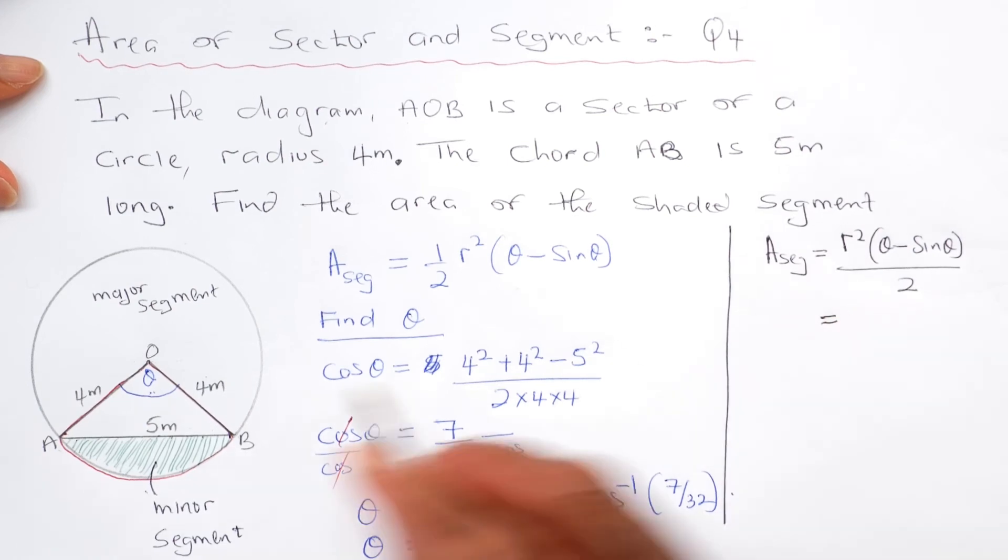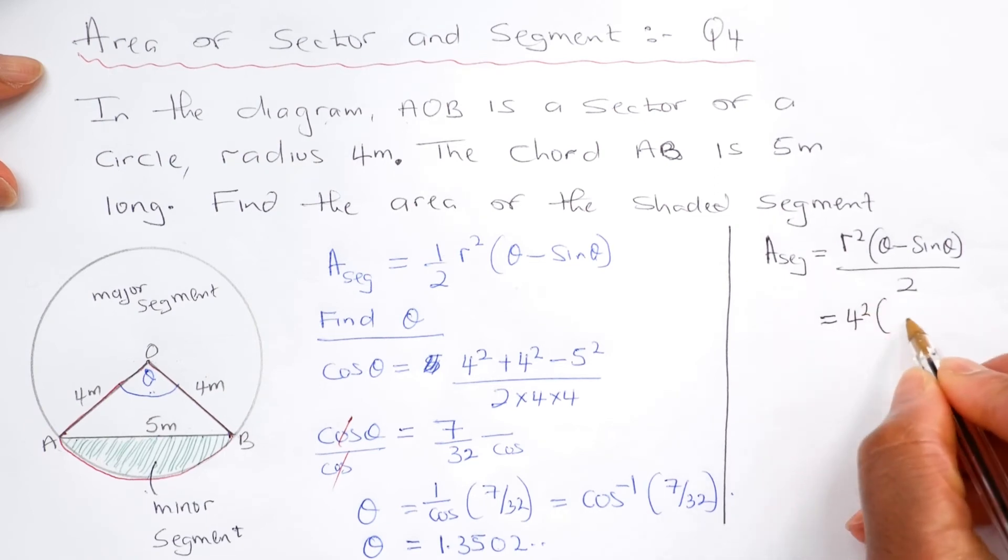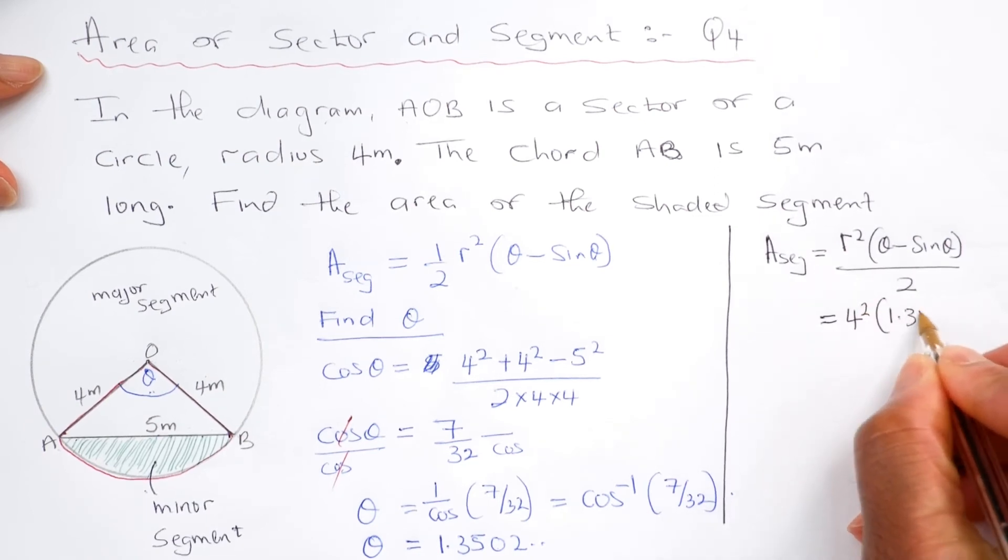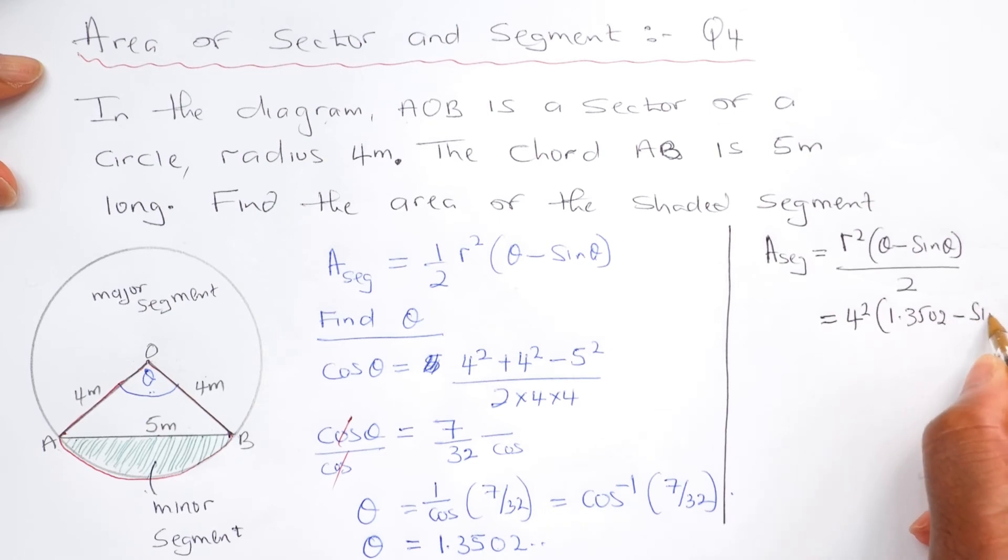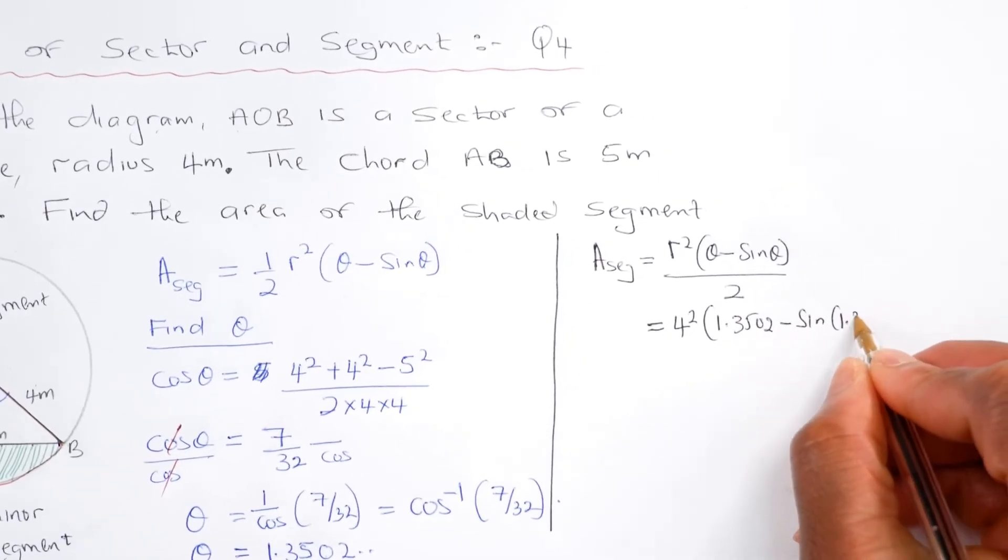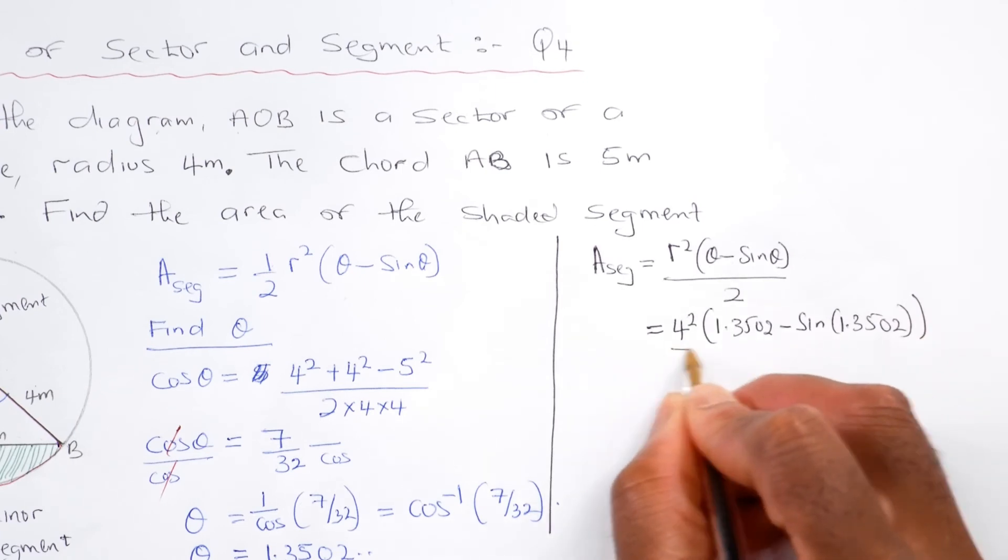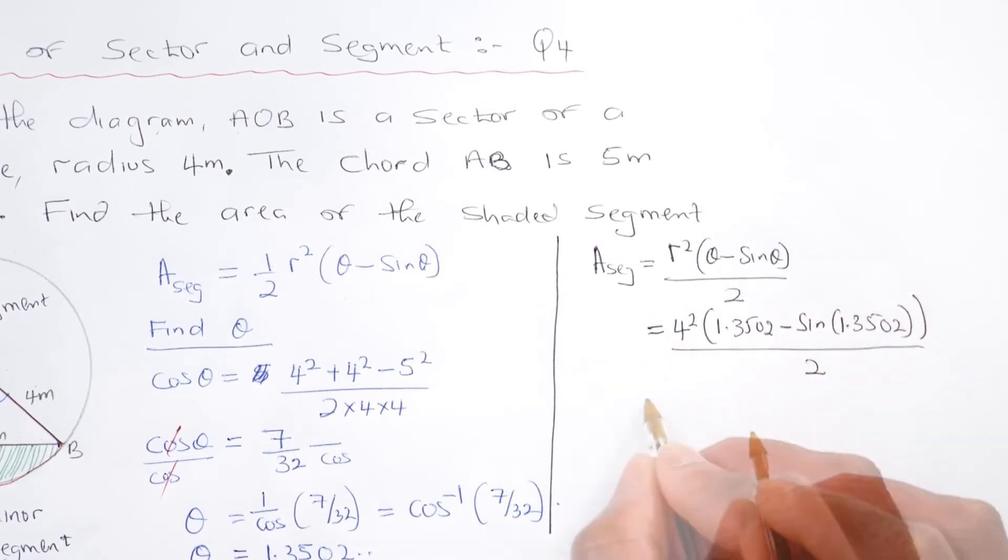That'll be equal to r is 4, so that'll be 4 squared into bracket 1.3502 minus sine 1.3502 close bracket, divide all by 2.